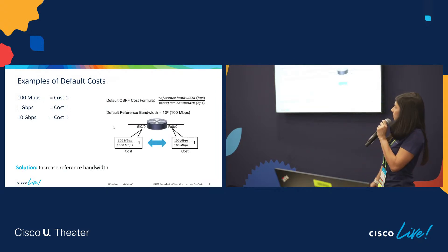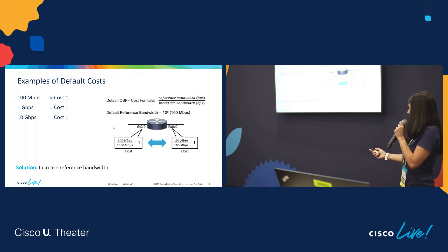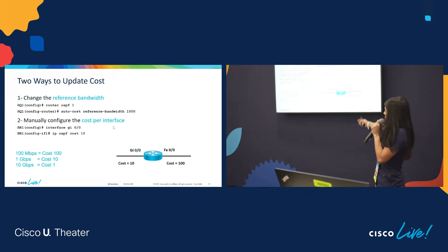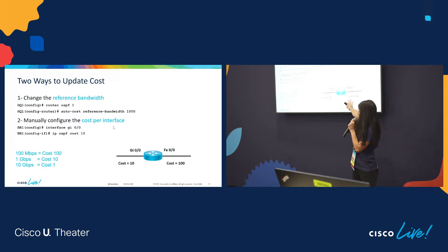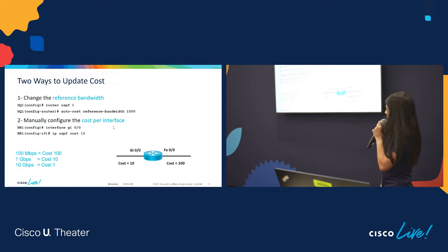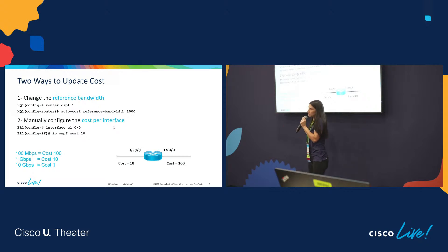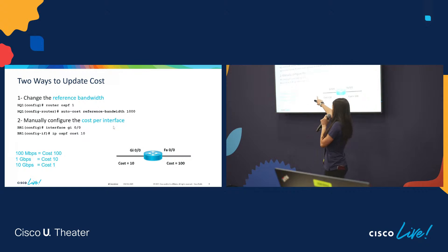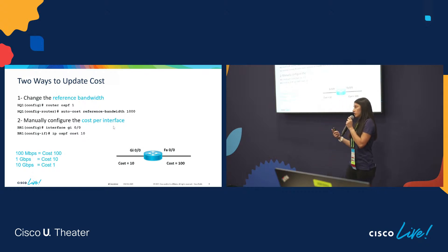Here are some examples of what the default cost is out of the box. One solution is we can increase our reference bandwidth. Here's an example of modifying our reference bandwidth, and that will change the cost to be less desirable on our slower link paths. The other alternative is to manually configure the cost on a link-by-link basis — you go into the actual interface and use the command 'ip ospf cost'. When you change the reference bandwidth, it changes it by default on the device for all interfaces, and then if you manually change it on an interface that overrides it. Always verify and double-check, and when you do change your reference bandwidth you do need to restart your OSPF process.